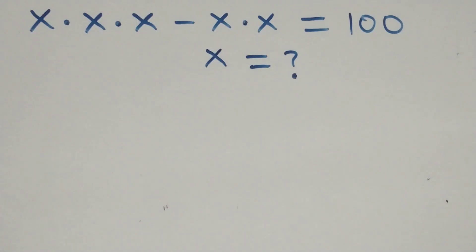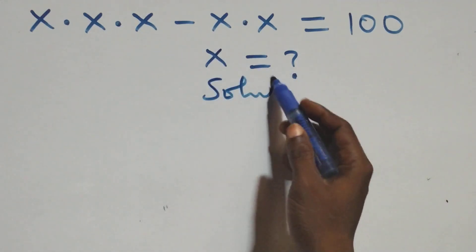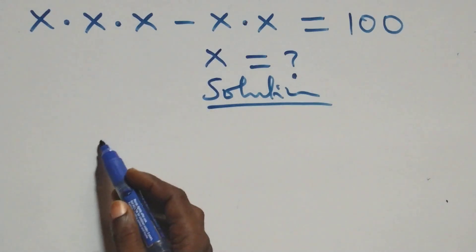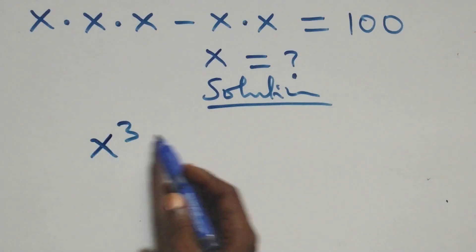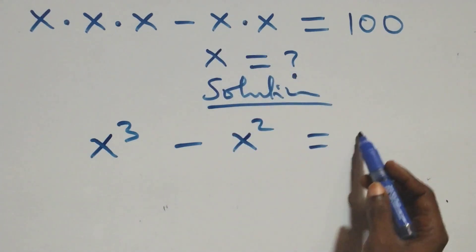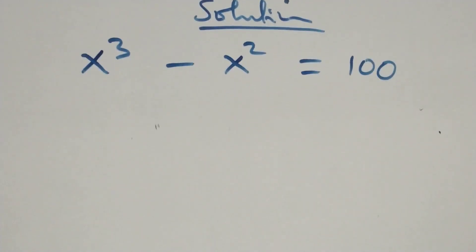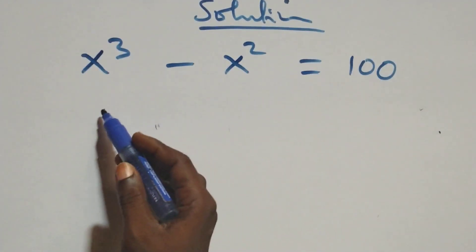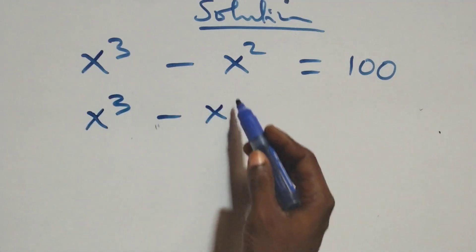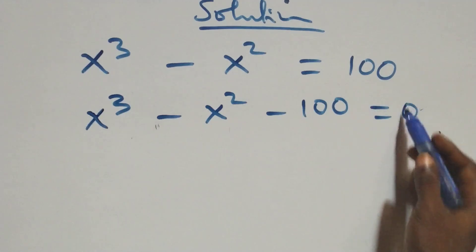Hello, you are welcome. How to solve this nice algebraic equation. From what we have here, we can write x times x times x as x cube, and minus x times x as x square, now equals to 100 on this side. Then the next step, we take 100 to the left-hand side and we have x cube minus x square minus 100 equals to 0.